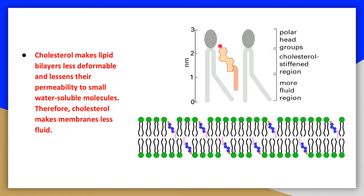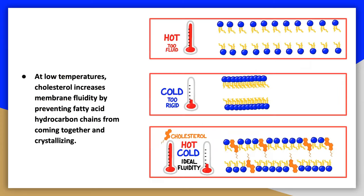Although cholesterol makes bilayers less fluid at the high concentrations found in eukaryotic cells, it also prevents fatty acid hydrocarbon chains from coming together and crystallizing. Therefore, cholesterol prevents fatty acid chains from ordering into a crystal-like state and inhibits phase transitions in lipids at low temperatures. Under these conditions, cholesterol inhibits the transition from liquid to solid, decreasing the membrane freezing point.